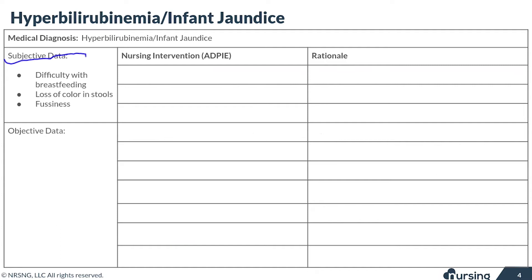The subjective data you're going to see with this diagnosis — probably the first thing that parents may report is difficulty with breastfeeding. Sometimes this comes as poor feeding, but it may also come out as a decreased amount of urine output or fewer wet diapers. Parents may also notice a loss of color in the stool, describing it as pale. Moms and dads may also notice that the baby is a bit fussier or even a bit more tired.